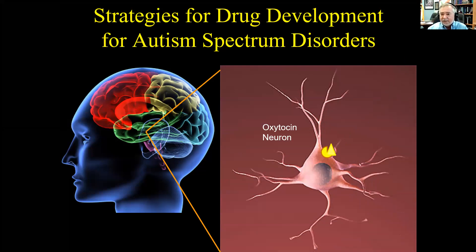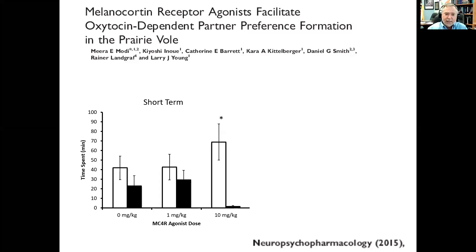I don't think this melanocortin agonist is necessarily going to be a treatment for autism, but it makes the principle that it's a melanocortin agonist that causes local release of oxytocin into the PVN, priming those PVN neurons so that when another stimulus comes, you get a much more robust release of oxytocin. If we give that to the voles, it can induce a strong pair bond without having to directly inject them with oxytocin.